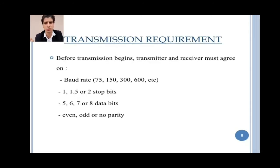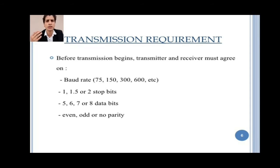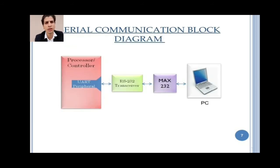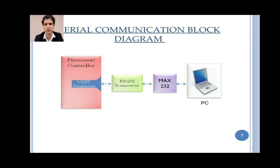Next is transmission requirements. Before transmission begins, the transmitter and receiver must agree on baud rate — it may be 75, 150, 300, 600, etc. Parity may be even, odd, or none. The serial communication block diagram consists of UART, peripheral, RS-232, transceiver, MAX-232, and PC.